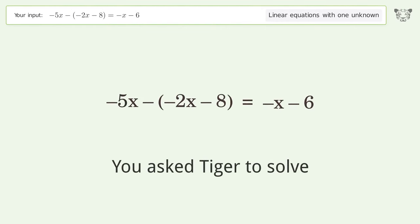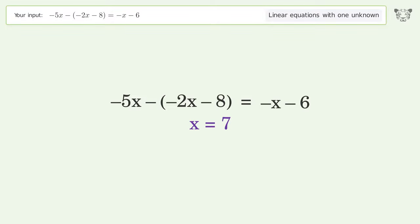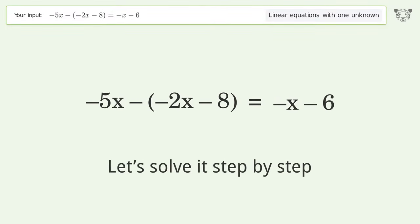You asked Tiger to solve this. This deals with linear equations with one unknown. The final result is x equals 7. Let's solve it step by step.